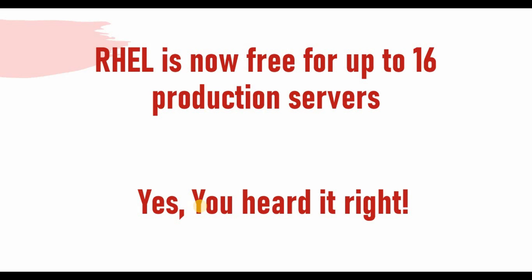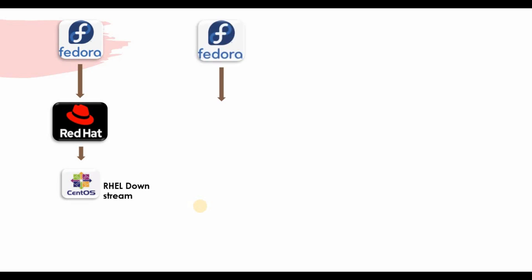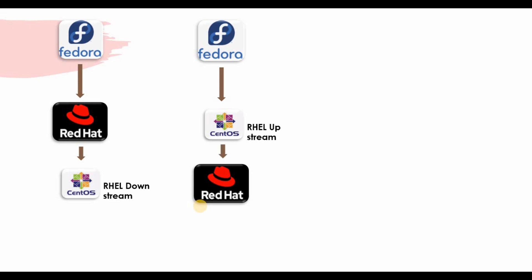We're going to talk about this in this tutorial. Before I get into that, I want to give a recap on what we discussed in one of my previous tutorials — Red Hat stopped CentOS Linux and they were moving to CentOS Stream. Previously, the flow was from Fedora to Red Hat, and then CentOS was downstream of Red Hat. Now that has changed, and CentOS Stream will be an upstream of Red Hat.